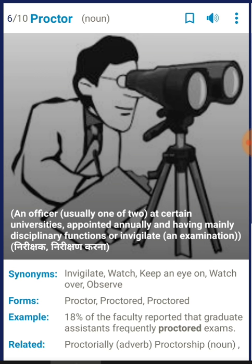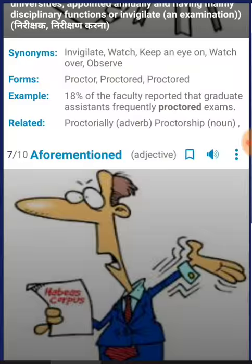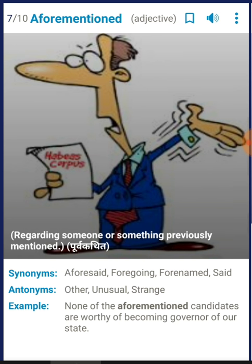The next word is 'proctor'. It means an officer at certain universities, appointed annually and having mainly a disciplinary function, or an invigilator. In your exams, you know who an invigilator is — you can use 'proctor' for that person. Synonyms: invigilate, watch, keep an eye on, observe. For example: '18% of the faculty reported that graduate assistants frequently proctored exams.'